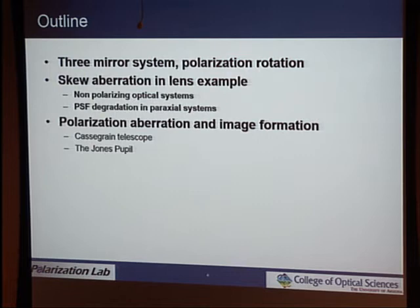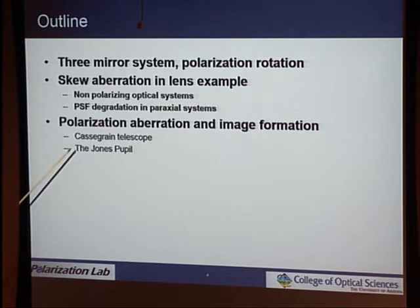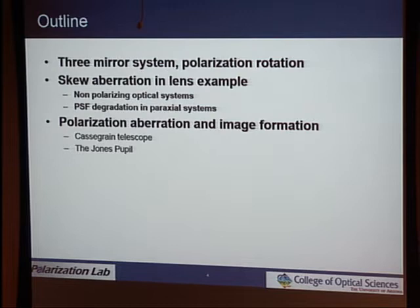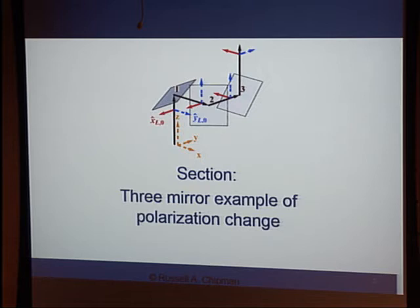In outline, I want to show you a three-mirror system with some polarization rotation, then take those concepts into a lens example and try to convince you that the point spread function in paraxial optics is not perfect. Then we'll talk about polarization aberration, look at examples with the Cassegrain telescope, and how aluminum coatings can degrade the optical performance, particularly with regard to exoplanet coronagraphs.